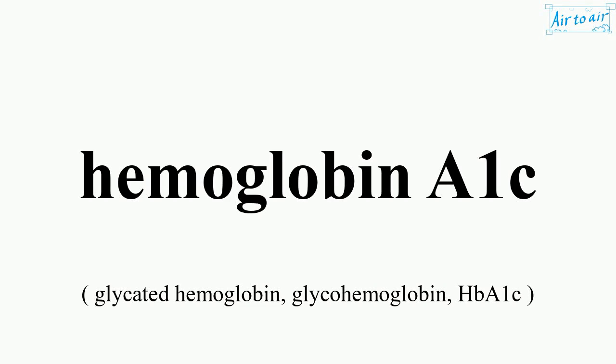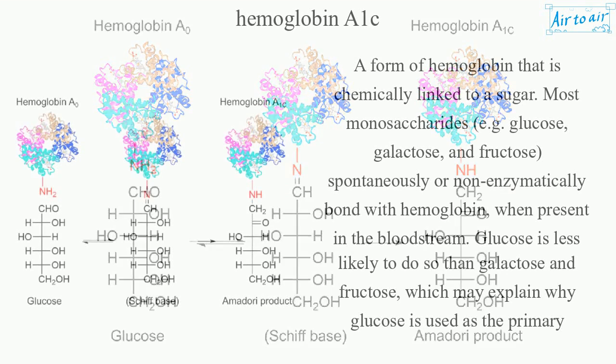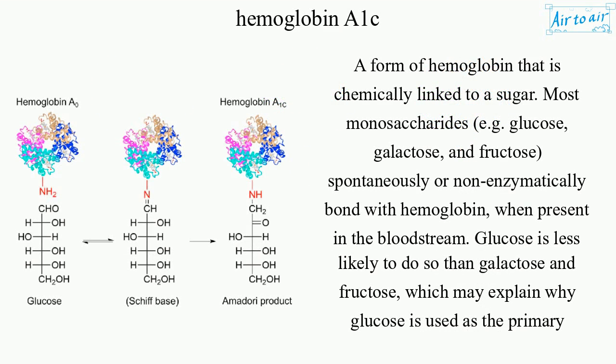Hemoglobin A1c is a form of hemoglobin that is chemically linked to a sugar. Most monosaccharides, e.g. glucose, galactose, and fructose, spontaneously or non-enzymatically bond with hemoglobin when present in the bloodstream.